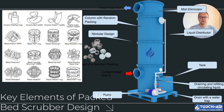Packing material — here's where the magic happens. The packing material inside your scrubber provides the surface area where gas and liquid meet. The more surface area you have, the more efficient your scrubber will be. But you also want to minimize pressure drop, so choosing the right packing is key.